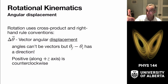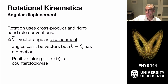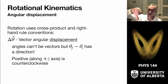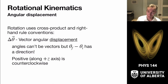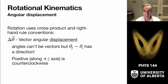We apply our right-hand rule: take your right hand, curl it in the direction of motion, and your thumb indicates the direction of the angular displacement vector. If you curl the other way, you'll notice that the angular displacement is pointed down. In general, if we have rotation in the xy plane going counterclockwise, then the positive z-axis is the positive angular displacement.